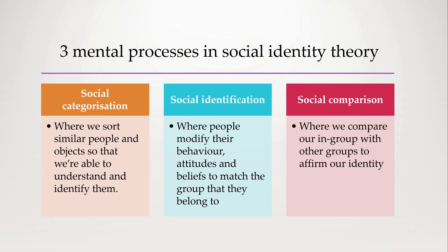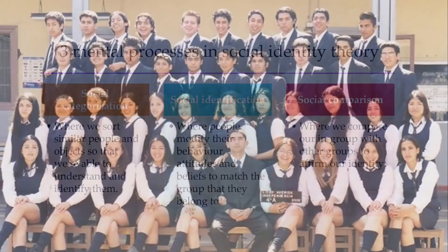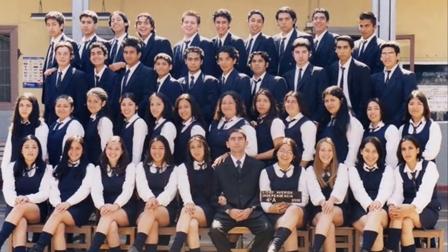One place I commonly see these three processes in play is with year-level cohorts at school. If you meet someone for the first time and find out they're in year 11, you might be like, well, that explains a lot. I mean, the year 11s are the goody two-shoes grade, or at least in front of the teachers. But you know what they're actually like.